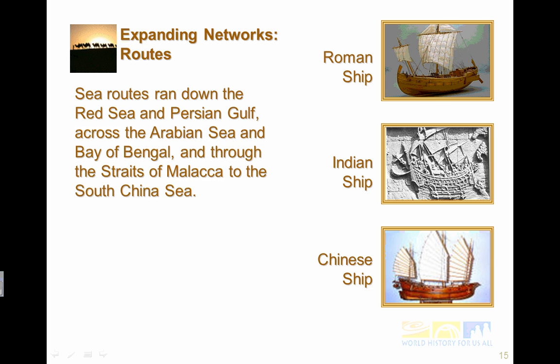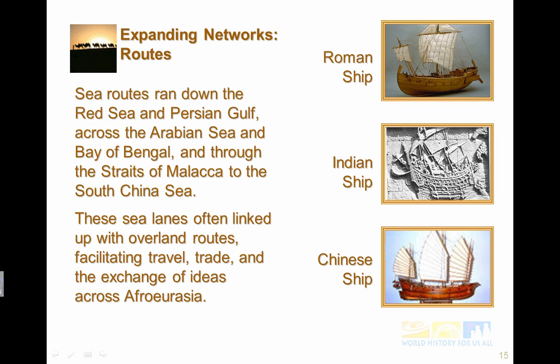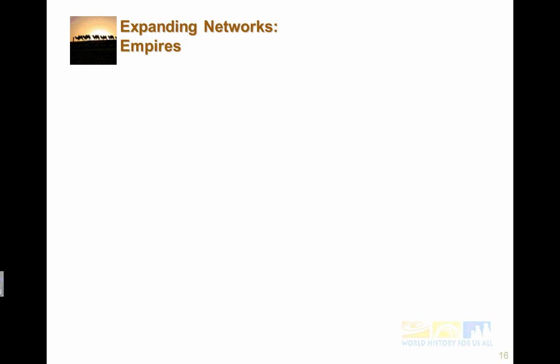Sea routes were also very important. They ran down the Red Sea and the Persian Gulf, across the Arabian Sea and the Bay of Bengal, and through the Straits of Malacca to the South China Sea. You can see here a Roman ship, an Indian ship, and a Chinese junk ship. These sea lanes often linked up with overland routes, facilitating travel, trade, and the exchange of ideas across Afro-Eurasia.